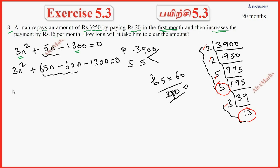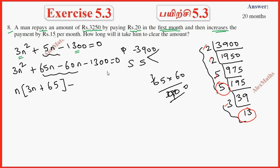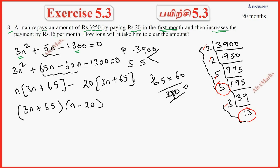Taking the first two terms: 3n plus 65, and the second term gives minus 60. So factoring: 3n plus 65 into n minus 20 equals 0.